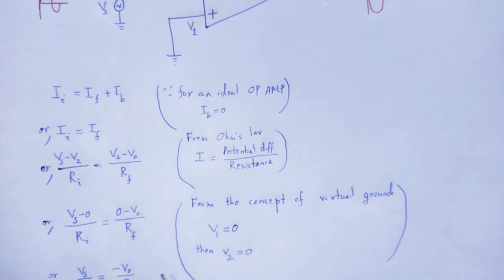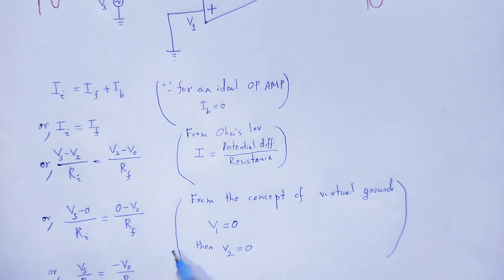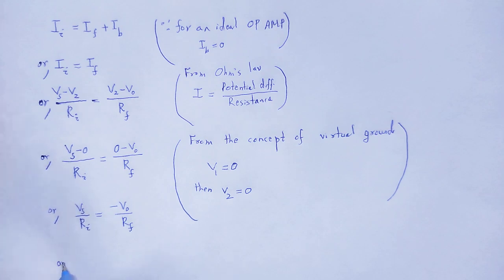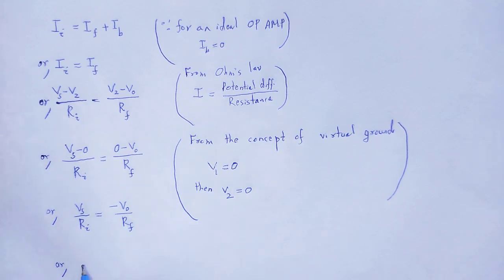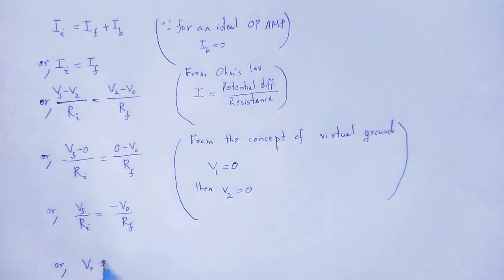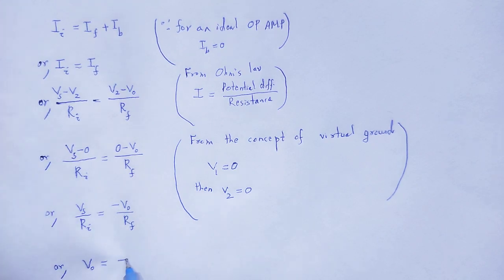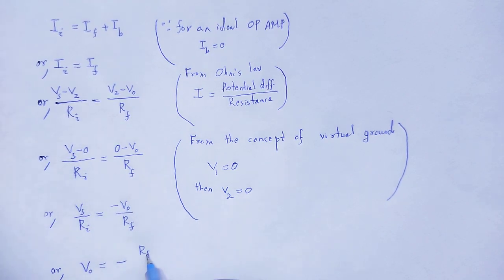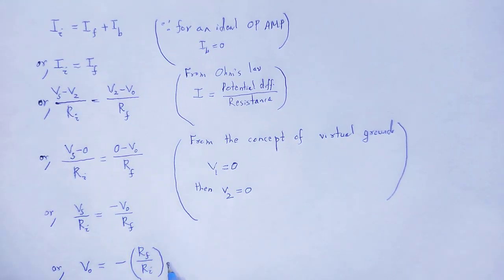We have to calculate what will be the output voltage. Therefore, Vo is equal to minus Rf by Ri into Vs.